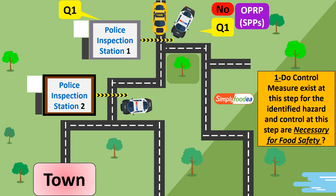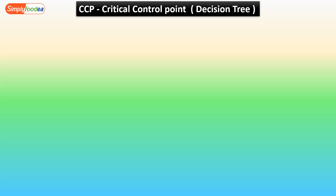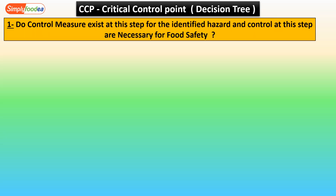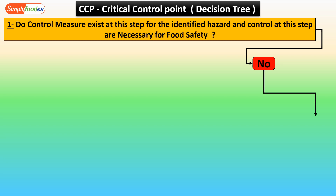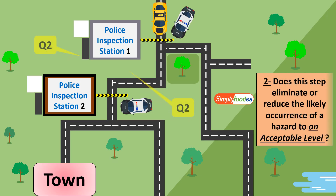But if the answer is yes — meaning this step is necessary for food safety — we will ask the second question. So to summarize: if the answer to the first question is no, it's not necessary for food safety, so it will be OPRP. If it is yes, we ask question number two.